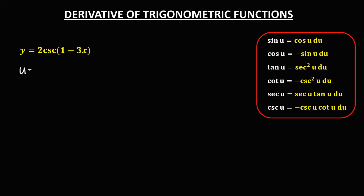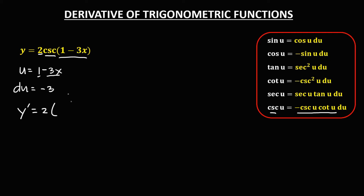Then for this given, so u is equal to 1 minus 3x. Then for the derivative of u, since the derivative of the constant is 0, and the derivative of negative 3x, that's negative 3. Then to find now the derivative, just bring down this number, then times the derivative of cosecant, that's negative cosecant u times cotangent u. So negative cosecant of 1 minus 3x, times cotangent of 1 minus 3x, then times the derivative of u, that's negative 3.